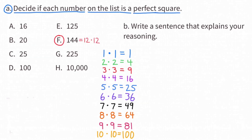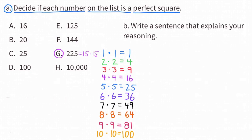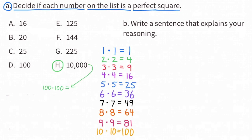F: 144. 12 times 12 equals 144, so 144 is a perfect square. G: 225. 15 times 15 is 225, so 225 is a perfect square. H: 10,000. 100 times 100 equals 10,000, so 10,000 is a perfect square.